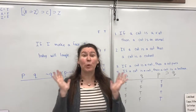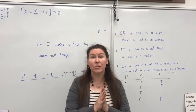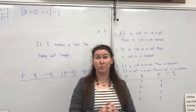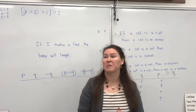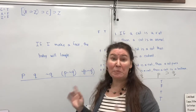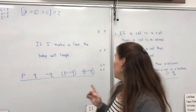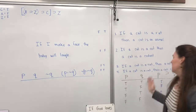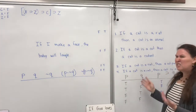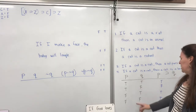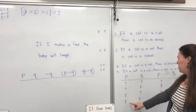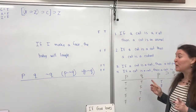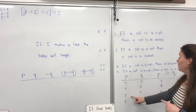Hey, eighth graders. We're going to continue the lesson on the conditional. I was going to go deeper into the truth table because it seems a little odd that you can have something that's false and false and leads to truth. So let's look at a couple of the false ones.